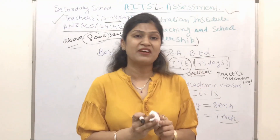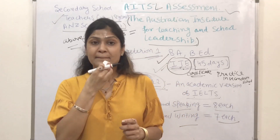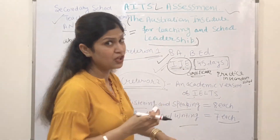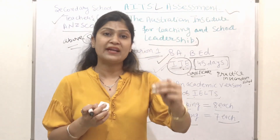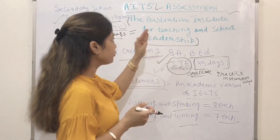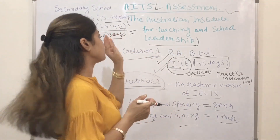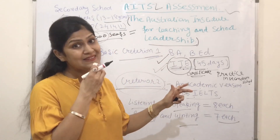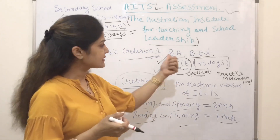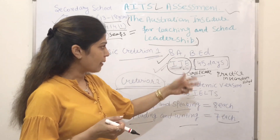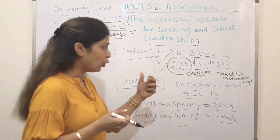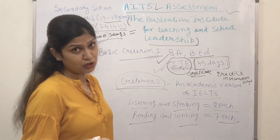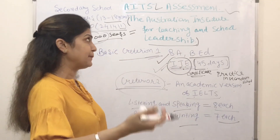Mostly when we talk about PR files, we say it requires General IELTS. But when applying for assessment — which is the first step to get Australian PR — we apply with Academic IELTS only. If you want to migrate as a secondary school teacher in Australia, this is your first step and you can do this by yourself. I will give the link in the description. You can search from there and send your documents online.